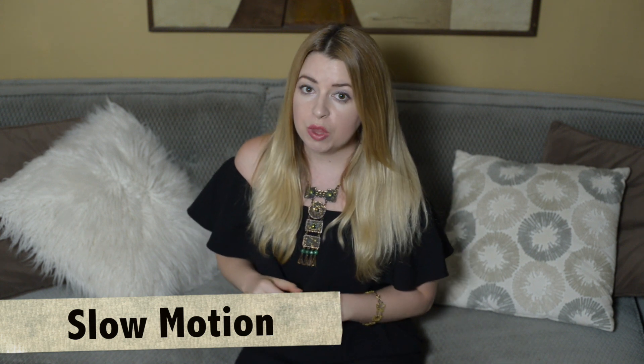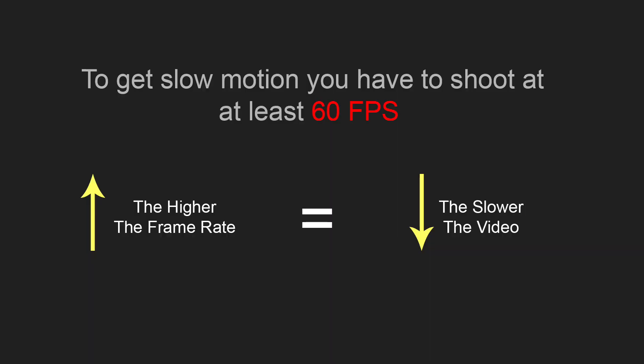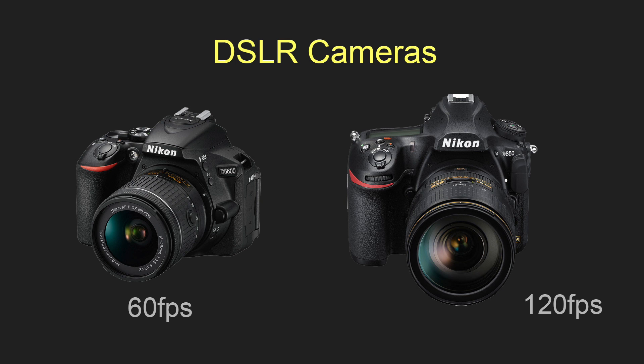Another cool feature which unfortunately not all cameras have is the ability to create slow motion videos. To get slow motion you will have to shoot your video at a frame rate of at least 60 frames per second — the higher the frame rate you can get, the slower you can make your video. Unfortunately, most DSLRs currently can only go up to 60 frames per second, with just a few going up to 120 frames per second.